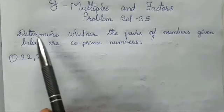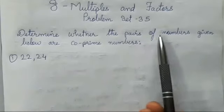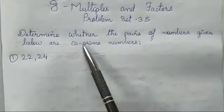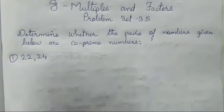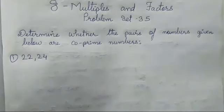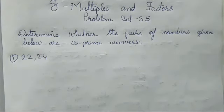So let's start with the first question. Determine whether the pair of numbers given below are co-prime numbers. Now co-prime numbers mean? What does it mean?